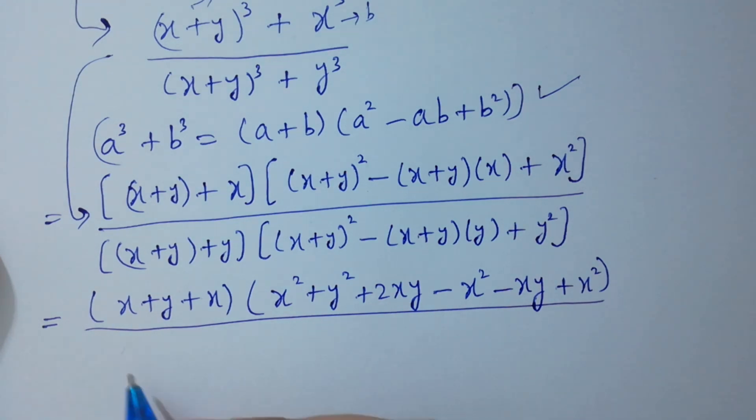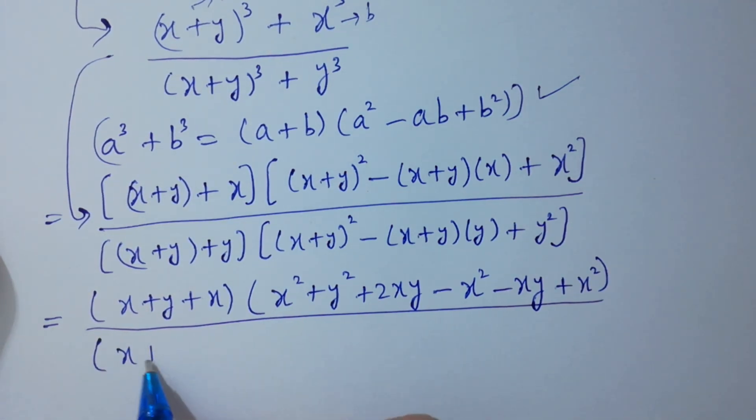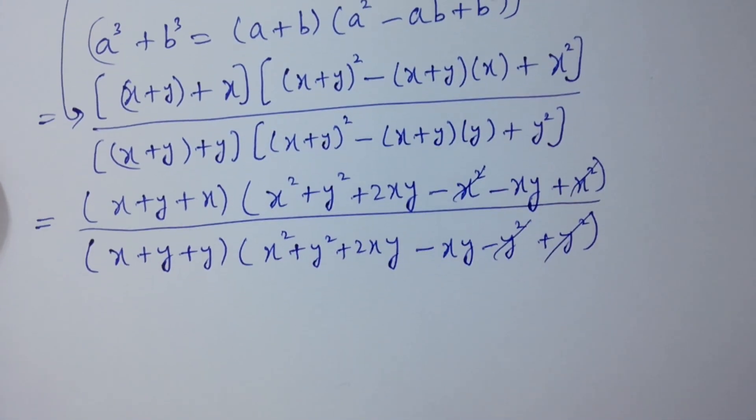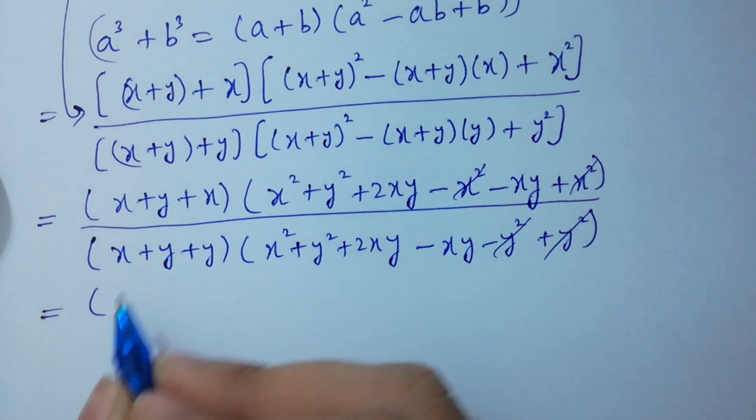In the denominator, x plus y plus y, x square plus y square plus 2xy, minus xy, minus y square, plus y square. In the numerator, you can see x square and x square will be cancelled, and here y square and y square will be cancelled.